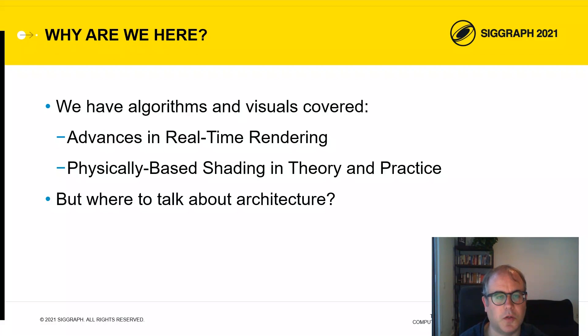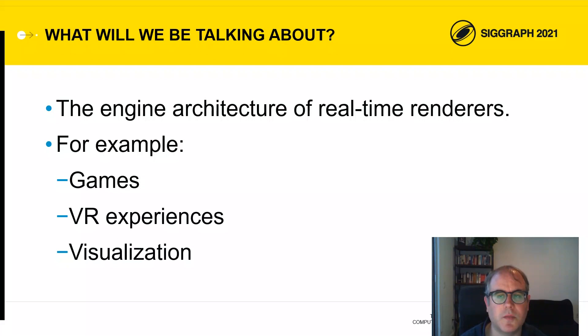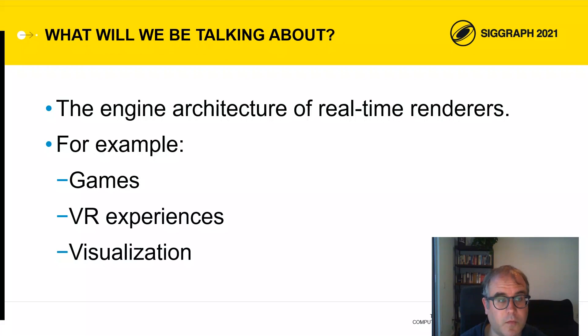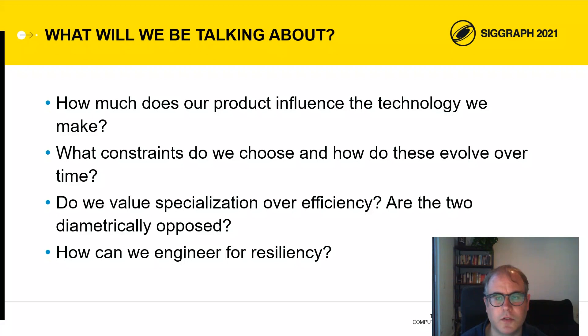What are we aiming to cover with this Rendering Engine Architecture event? Well, first, we are talking about the engine architecture of real-time renderers, not offline renderers of film. This primarily means games, as you'll see in our presentations from Activision about the Call of Duty Rendering Engine. But we also have speakers from Unity, whose product can be used for much more, such as virtual reality experiences or pre-vis of films. Equally, we have a presentation from Roblox, who not only have a game engine but a very powerful content creation tool. This means we'll be covering some very different products over the course of this event, and we'll learn how that influences the technological choices that we make.